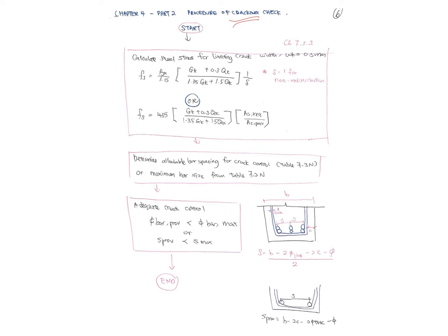For cracking, calculate the steel stress to limit crack width. Use wk = 0.3 mm as per clause 7.3.3 of BS EN 1992. Calculate σs using either sigma = 1 for the non-redistribution method or the alternative formula. Then determine the allowable bar spacing for crack control from Table 7.3N, or maximum bar size from Table 7.2N. Check that the bar spacing provided is less than the maximum allowed.